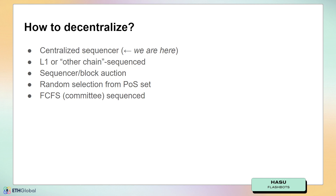And then what Stark is planning — random selection from a proof of stake set — where you basically have a consensus mechanism on top of your rollup and a proposer is selected randomly to propose the block. This is very similar to how it works in the layer one. And then finally, you can have various committee-based solutions, and the most common one would probably be first-come-first-serve.